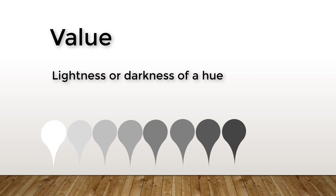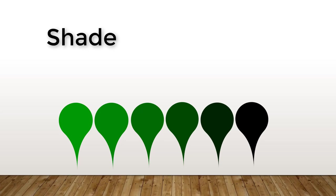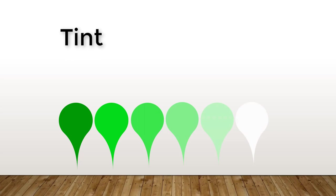You can see a full range of value. Shades: a hue produced by adding black. You can see various shades of green. Tint: a hue produced by adding white gives a tint.